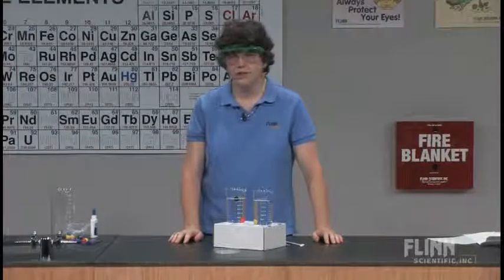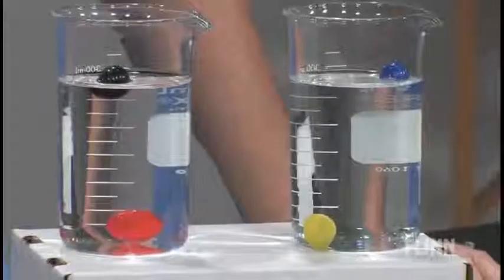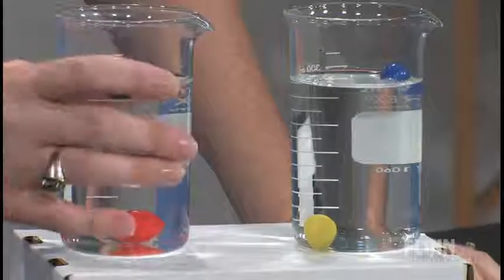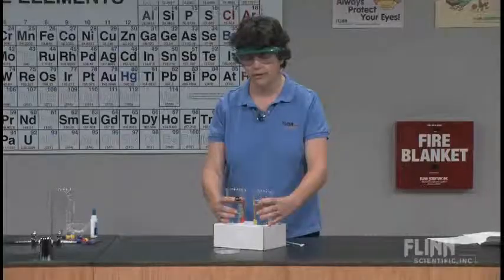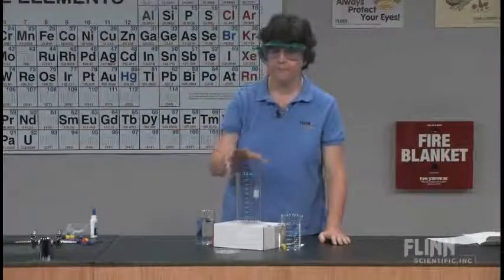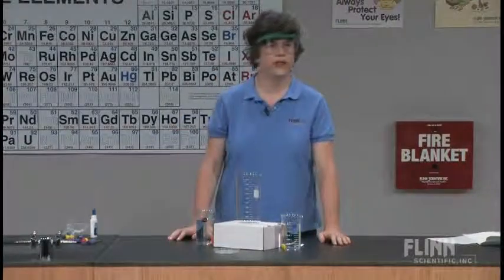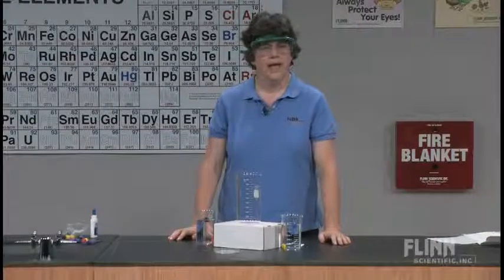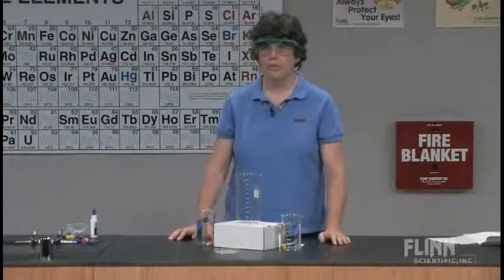Okay, so now I have my two soluble compounds, which means I have two different ions in this beaker and two different ions in this beaker. What I'm going to do is I'm going to take my two ionic solutions and I'm going to mix them together. And I want to know if I'm going to form a precipitate.